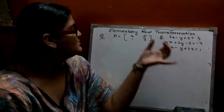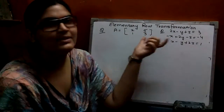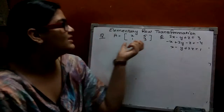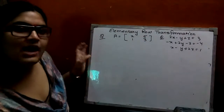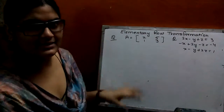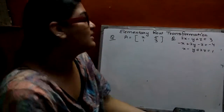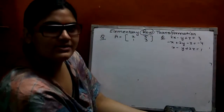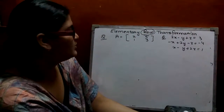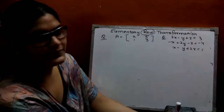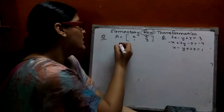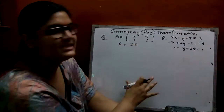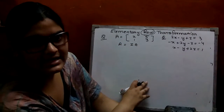Hello, now we will proceed with elementary row transformation. This is the same method you use to find out the inverse. There are two procedures which you can proceed: row and column. For row elementary transformation, you have to take A is equal to IA.